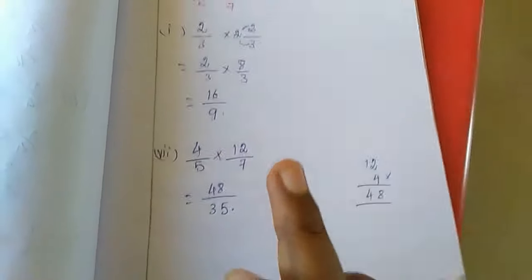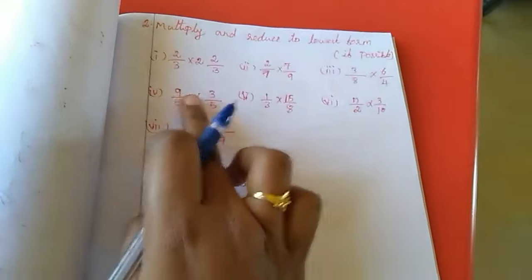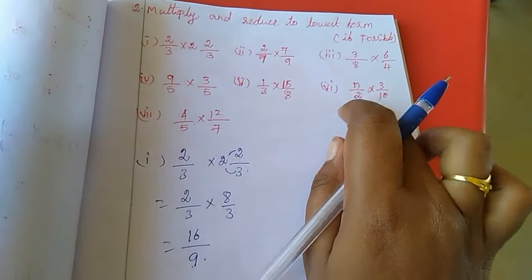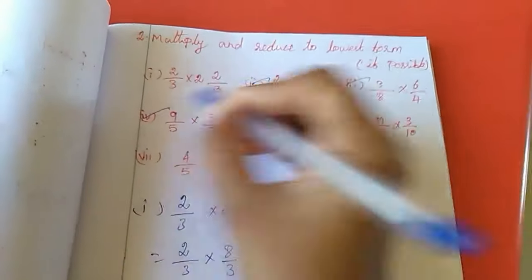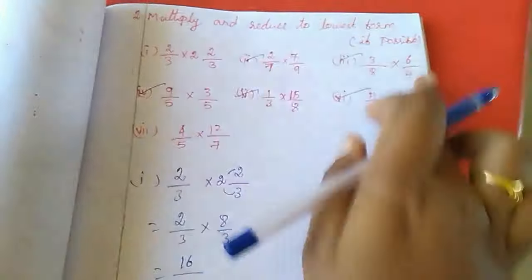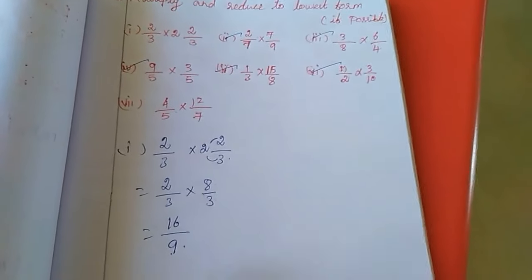This is the answer for 7th sum. Up to this is enough, no need to change as a mixed fraction. For every sum here they do not tell us to change it to mixed fraction, so no need to change this. In the sum, the balance sum is homework: second, third, fourth, fifth, sixth. These 5 sums are homework for you. Now we will move to the third sum.